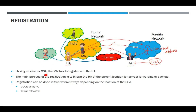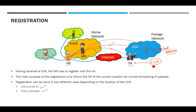Having received the COA, the mobile node has to register with the home agent. The main purpose of registration is to inform the home agent of the current location for correct forwarding of packets. Registration is done in two different ways: one is where the COA is at the FA, and the second is where the COA is co-located. Based on these two address types, there are two ways to register yourself with the home agent.